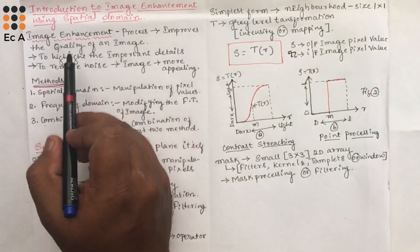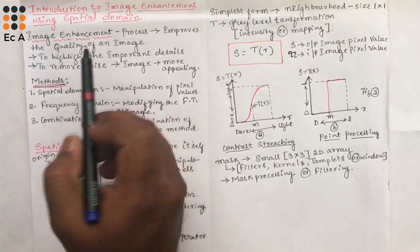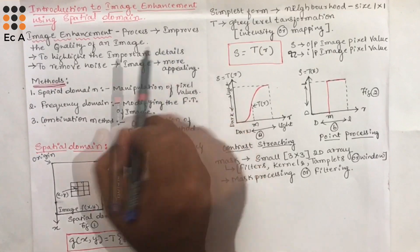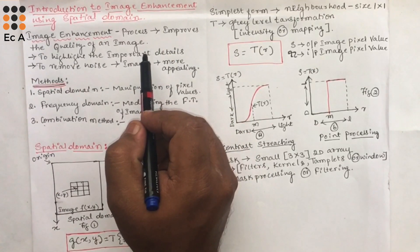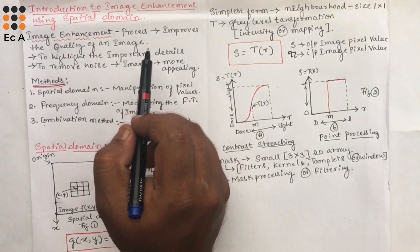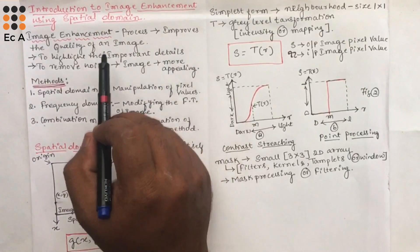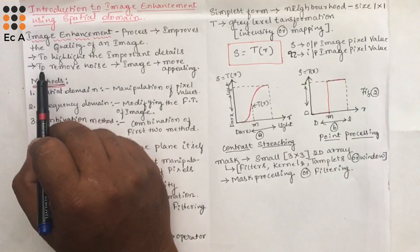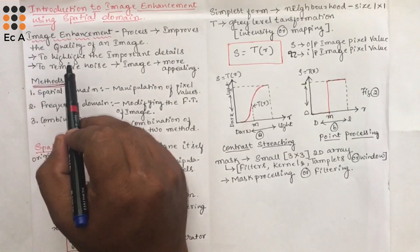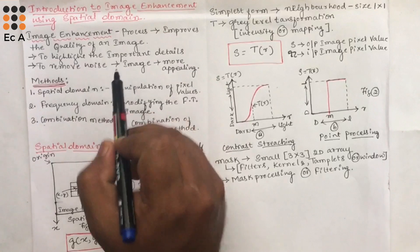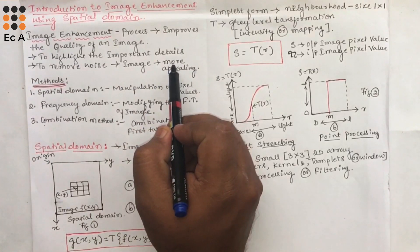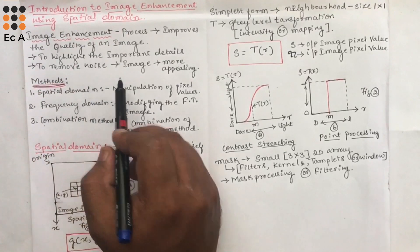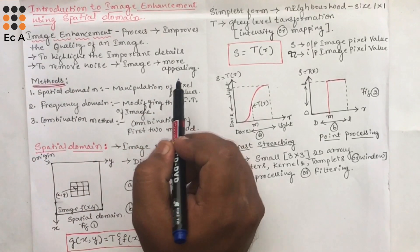Let us understand what is image enhancement. Image enhancement is a process that improves the quality of an image for a specific application. Depending upon the application, the quality of the image will be improved. The reason for image enhancement is to highlight the interesting or important details in an image, to remove the noise from an image, and also to make the image look more appealing.